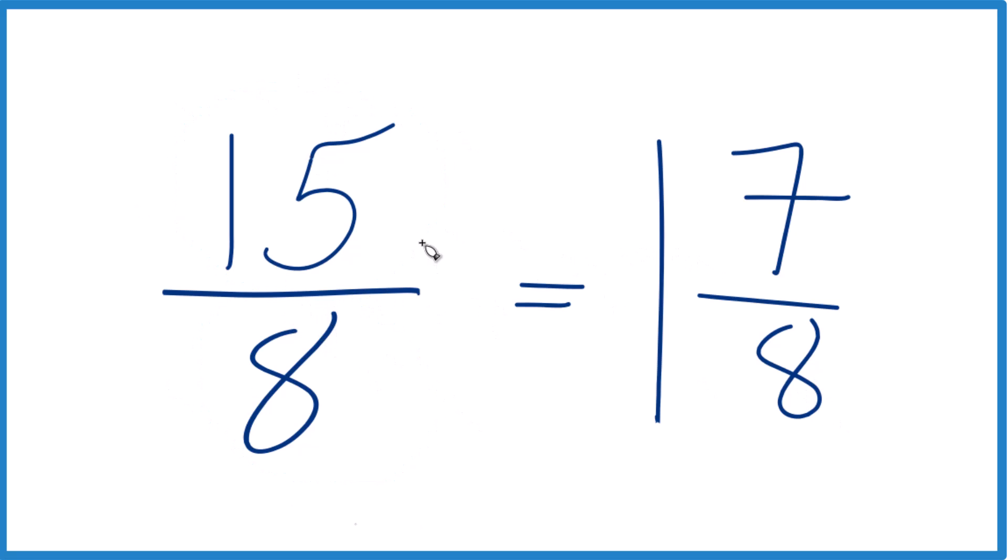So that's how you simplify 15/8. It's already simplified. As a mixed number, it's 1 and 7/8.